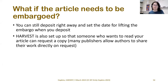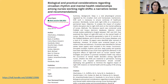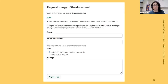What if the article needs to be embargoed? As mentioned, you can deposit right away and set the date for lifting the embargo — contact me if it needs to be extended. Harvest is also set up so that someone wanting to read your embargoed article can request a copy within Harvest. Many publishers allow authors to share their work directly on request, so even if you can't put it publicly on your website yet, a colleague can request it. When they click on an embargoed article, a form pops up saying 'request a copy of the document,' and you can decide to send it within Harvest.